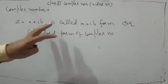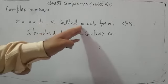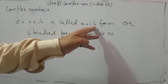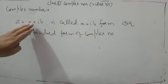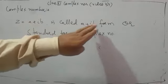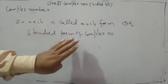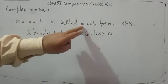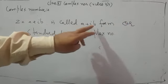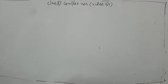In exercises, a direct question comes: 'Convert the following complex number into A plus IB form.' This means you have to write it in this standard form. Similarly, 'convert into standard form' means you have to make this form. These things you must remember.